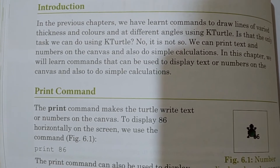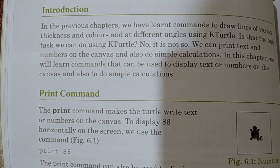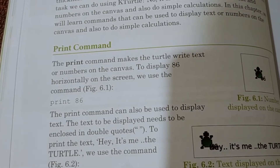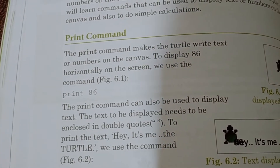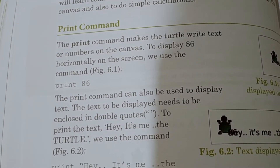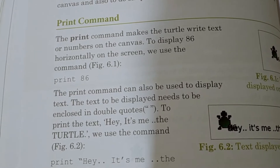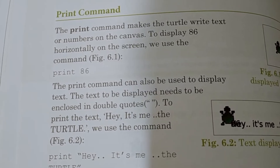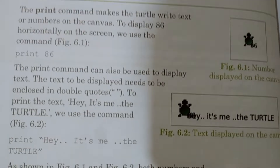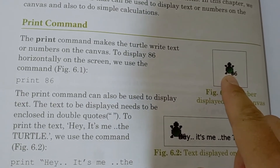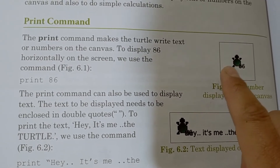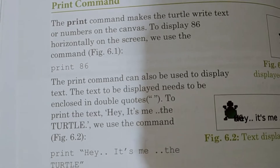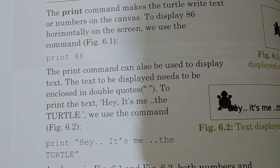First of all, the print command. The print command makes the turtle write text and numbers on the canvas. To display 86 horizontally on the screen, we use the command shown in figure 6.1. For example, we write: print 86.1. The print command can also be used to display text.